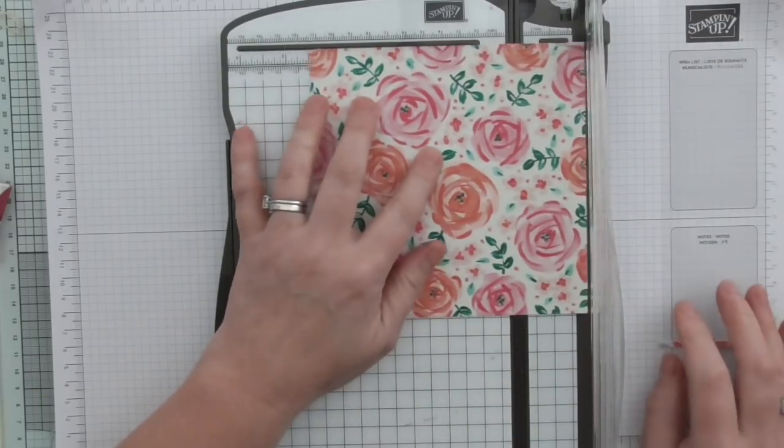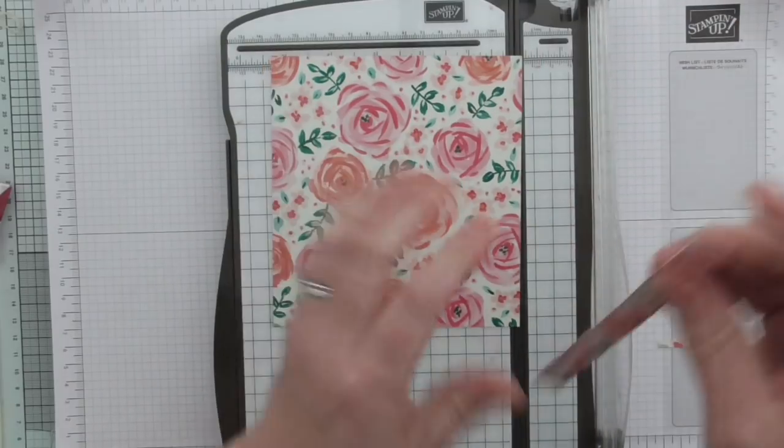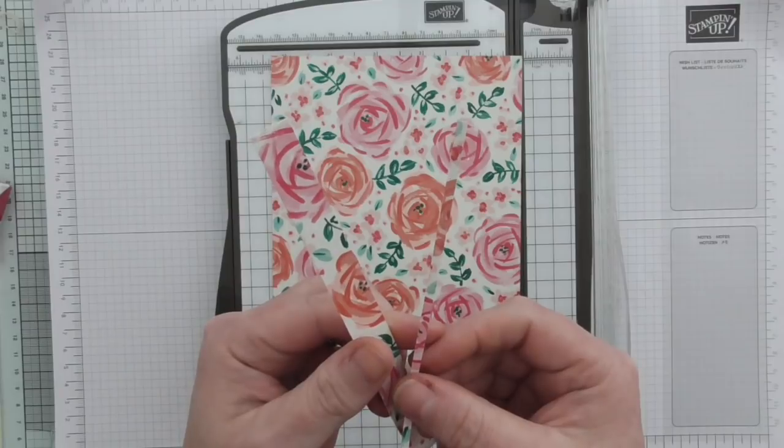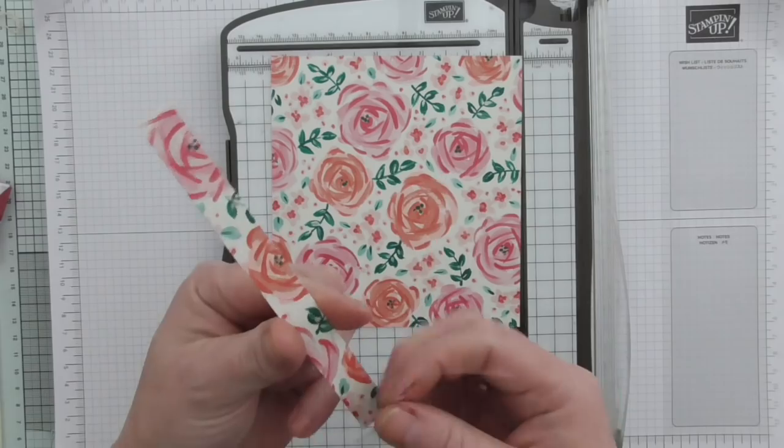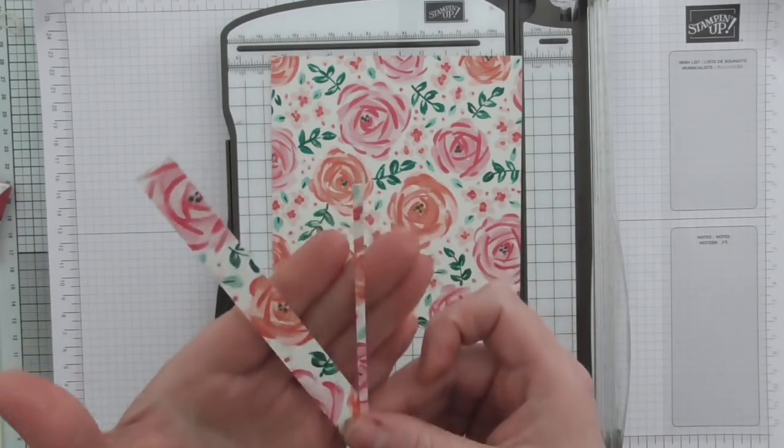I'm going to cut this to 5 and 7 eighths by 5 and a half. There's very little waste, just that sliver there and that sliver there. I think we can get away with discarding that. If you're saving scraps that big you need to stop it.